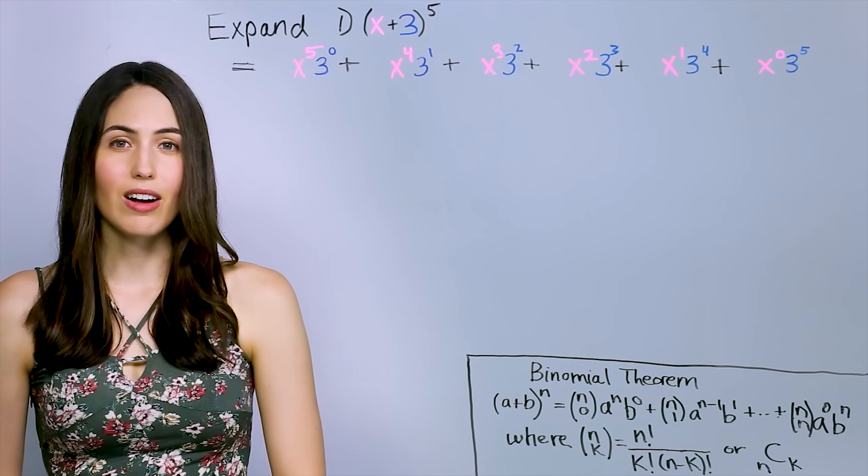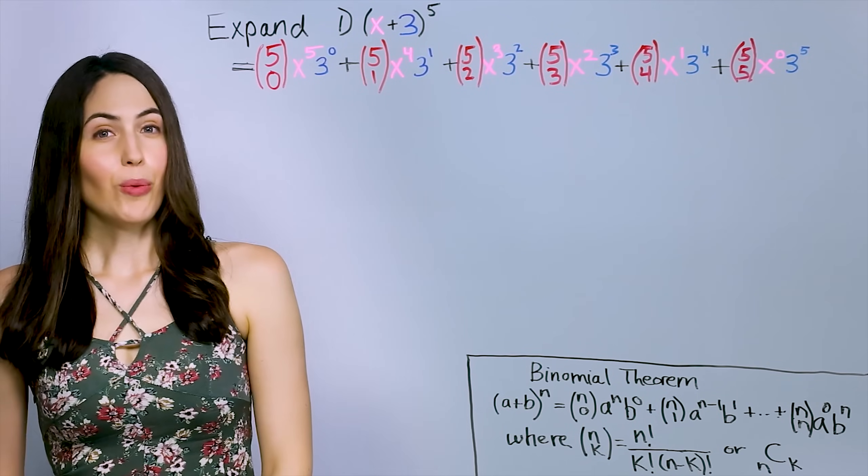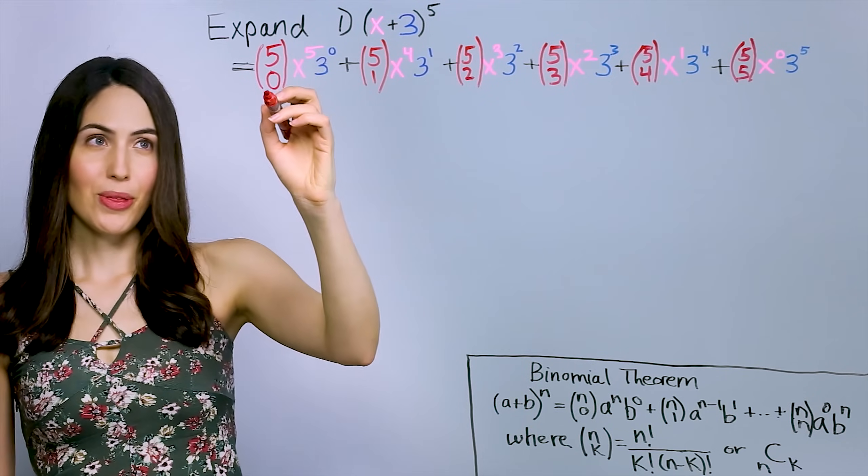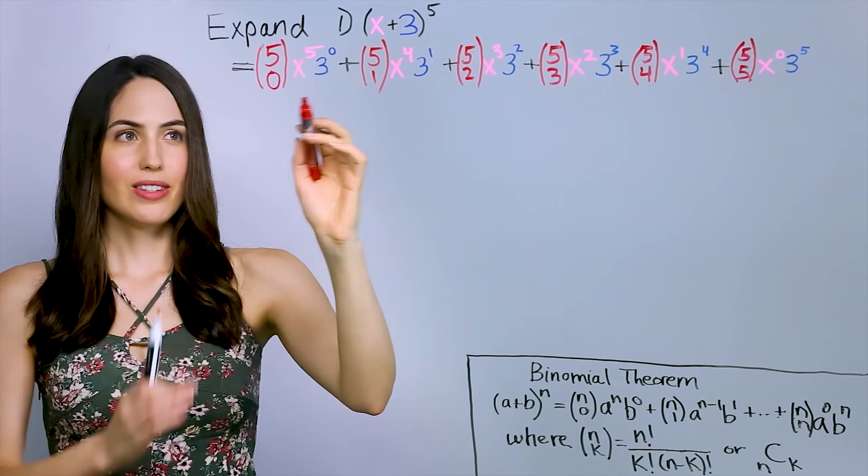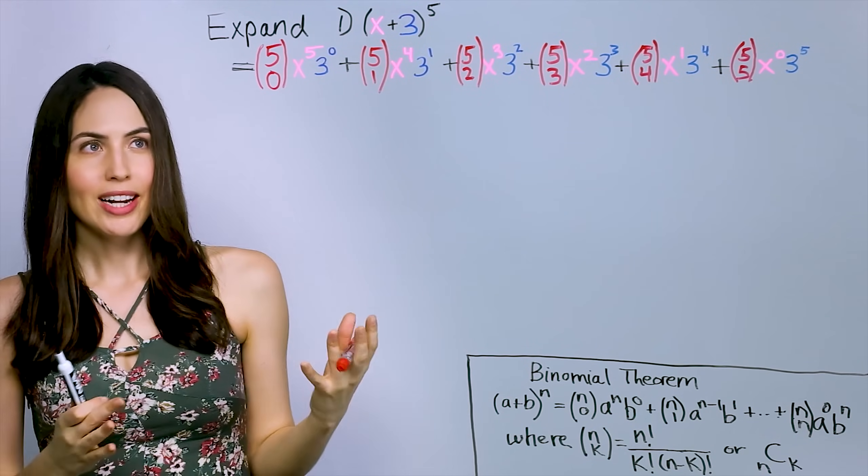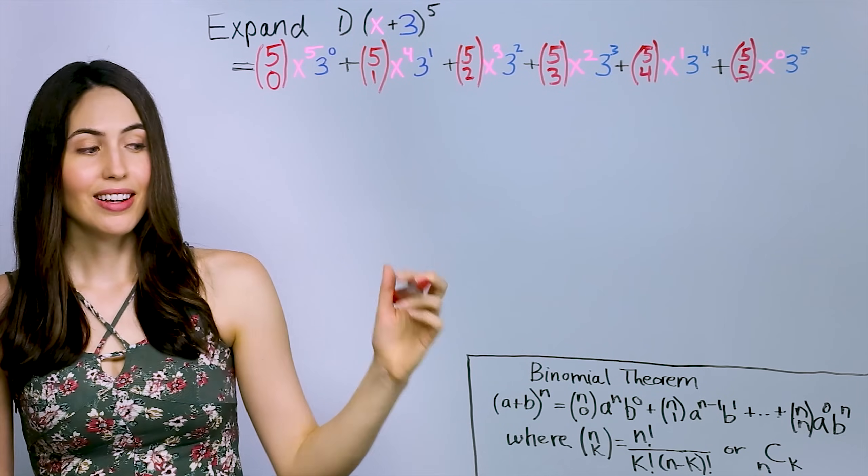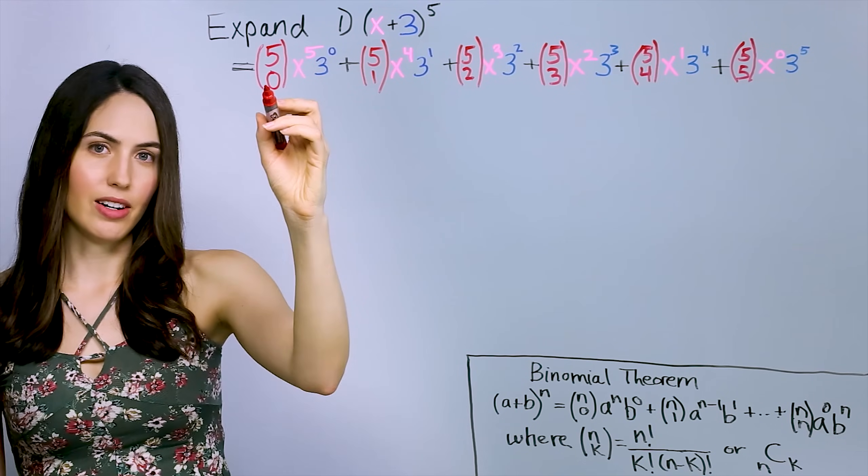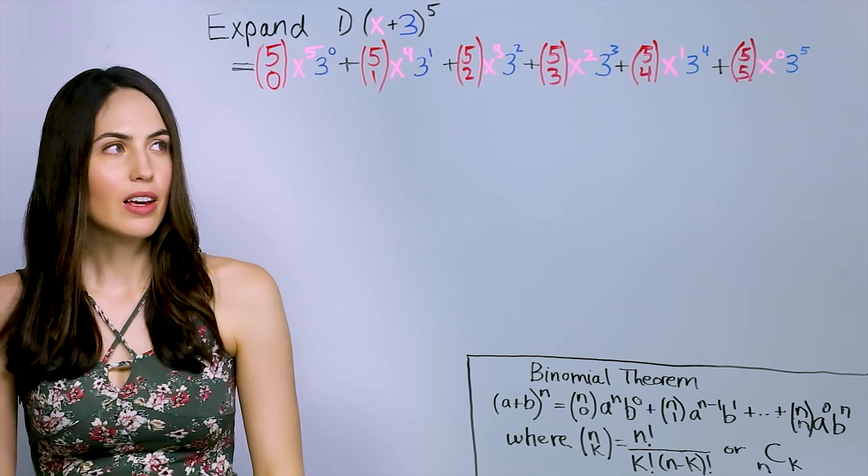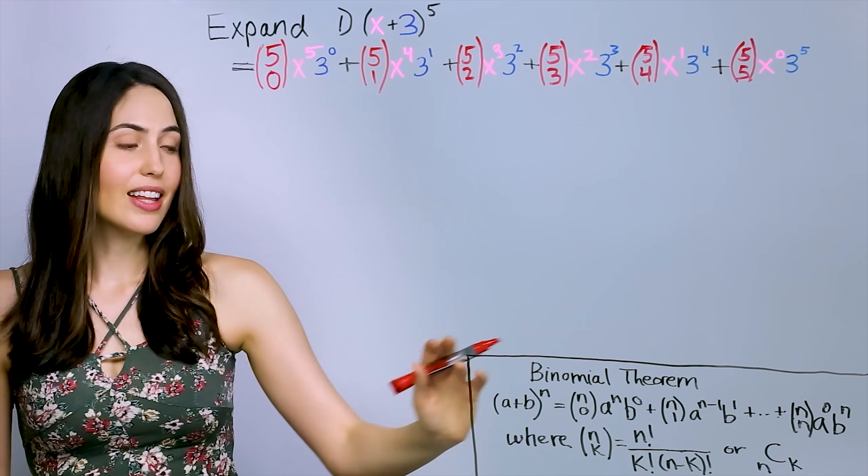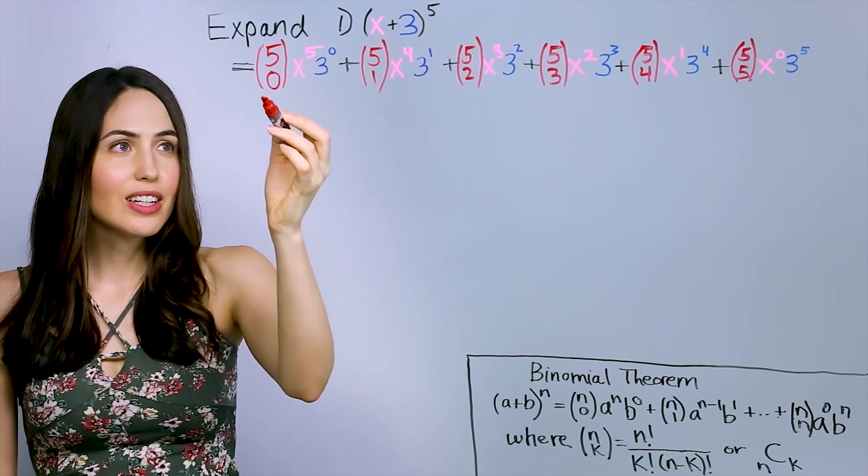We're going to write the coefficients using something called combination notation. What are those? What is this 5-0 thing? You might hear it said as 5 choose 0 or 5 choose 1. Each of those stands for some number that we're going to find. But when you're writing this out, the top number you write will just be your power number. It's just 5 in all of these. It's also known as your n in a formula we're about to use. And the bottom number when you're writing it just starts at 0 and counts up. It's a counter all the way up to 5. It's also known as your k down here. And if you just learned combinations, you might instead see this notation with a capital C instead of this. It's just notation. It'll give you the same numbers. But what does it all mean? What do each of these really equal?